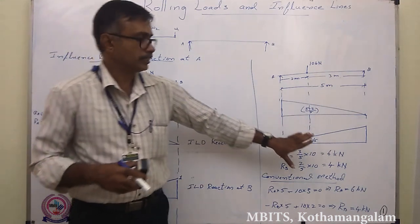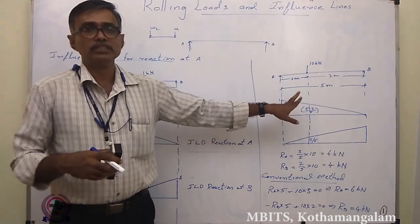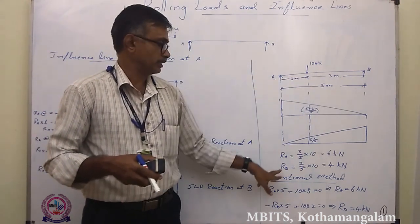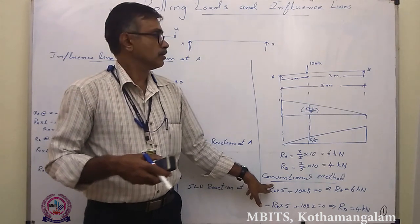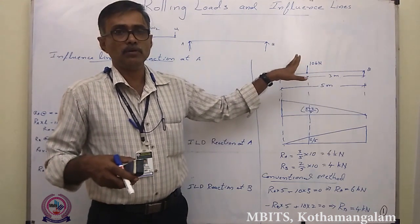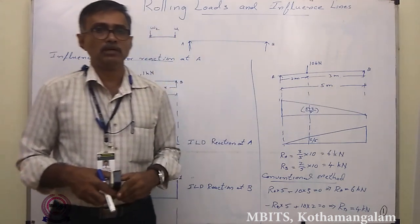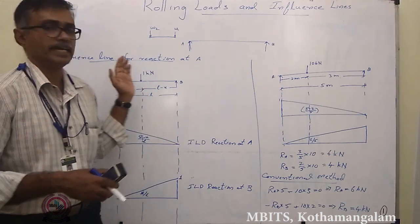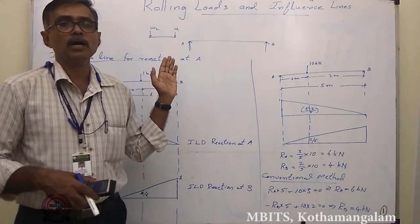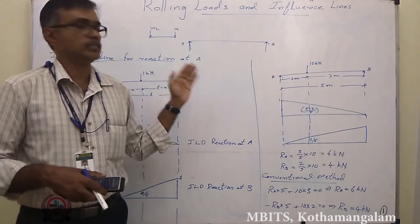The difference between the two methods is that the influence line diagram approach requires drawing the diagram first. Since there is only a single concentrated load here, the conventional method may seem easier. But when there are a number of moving loads, the influence line method becomes much more efficient. Today we learned how to draw the influence line diagram for reaction at a support. In the next class, we will learn how to find the shear force at any section using the influence line diagram.